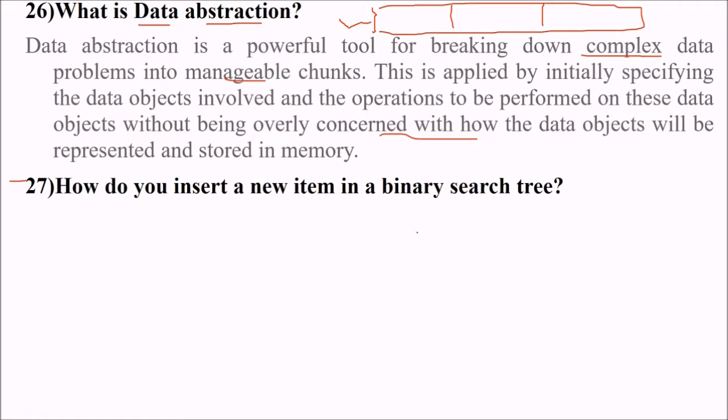27th is how do we insert a new item in a binary search tree? You have a binary search tree. On the left side of a node or the left subtree, all the members are less than this node. It can be a root node or any other node in between. And on the right subtree, all the members would have a number which is greater.